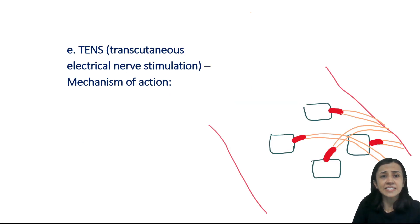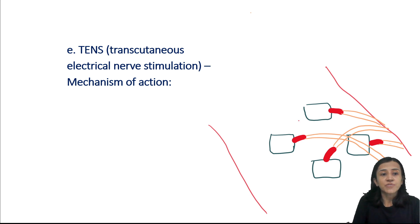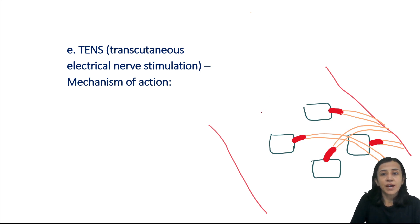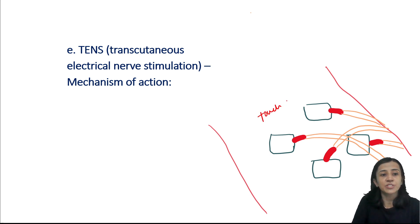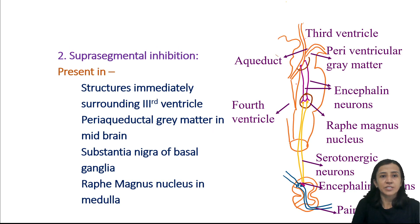Another application is TENS therapy — transcutaneous electrical nerve stimulation — given in chronic pain. Electrodes are placed transcutaneously on the surface of the skin. Low-threshold, non-pain fibers like touch fibers are stimulated by electrical stimulation, and when stimulated, they result in inhibition of pain fibers.